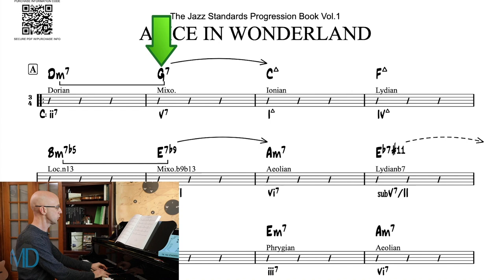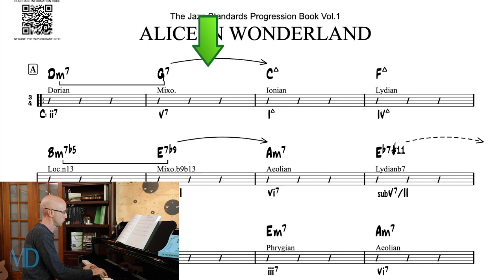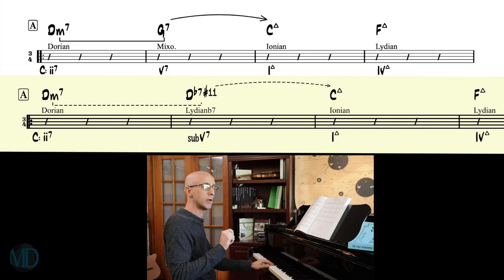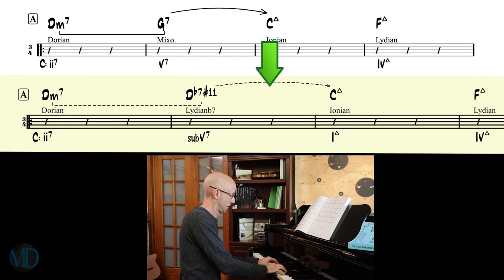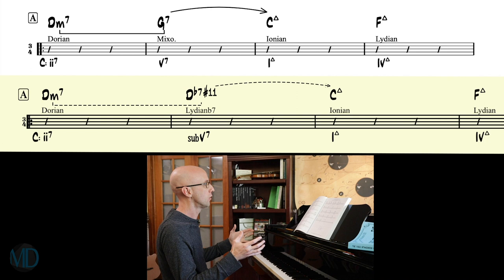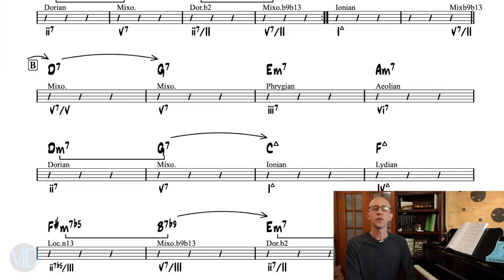So before we had this. So now let's swap out the G7 for the D flat seven. We'll get this. Beautiful. And both work. The G7 creates this tension release when we go to the C, just like the sub five does.